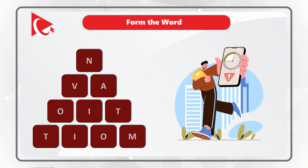Give yourself 10 to 15 seconds to see if you can answer this question. The solution to this challenge is simple: you need to move from the bottom to the top. If you look closely at the pyramid, the higher row is calculated as the sum of the bottom two adjacent values plus an increment, and the increment increases by one with each row.